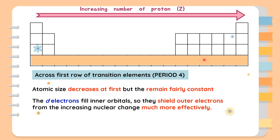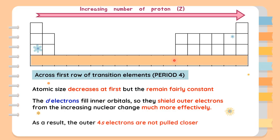This happens due to the massive electrons occupying the 3d inner orbitals. The Aufbau principle suggests that the 4s orbital should be filled before the 3d orbital, meaning there are already electrons in the 3d orbital. The 3d inner orbitals will shield the 4s orbital more effectively from the nucleus, even though the nuclear charge increases across the period. Hence, the 4s electrons are not pulled closer, making the size remain fairly unchanged.